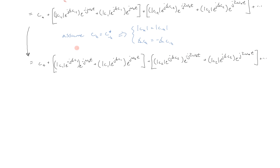Here, we have replaced each occurrence of the magnitude of c sub negative 1 with the magnitude of c sub 1, and same thing with 2, because of this even symmetry. And we've replaced the phase of c sub negative 1 with the negative phase of c sub 1, due to this odd symmetry of phases, and we get this kind of expression.